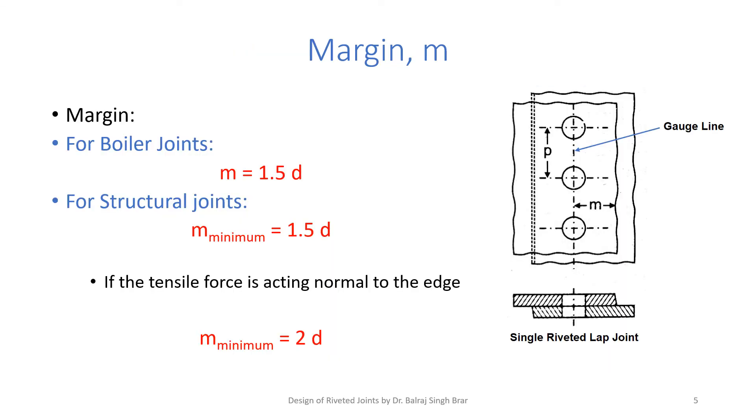So to arrest these two types of failures, what we do is we control the margin M, which is the distance of the gauge line from the edge. We control M.